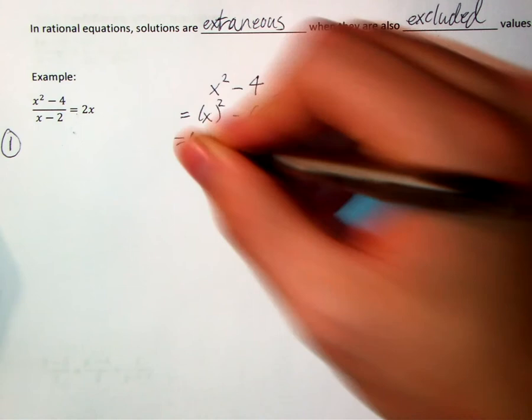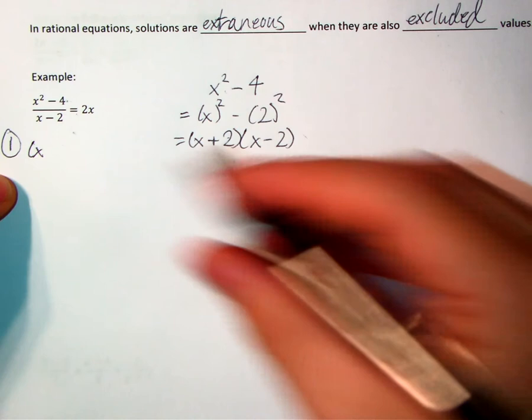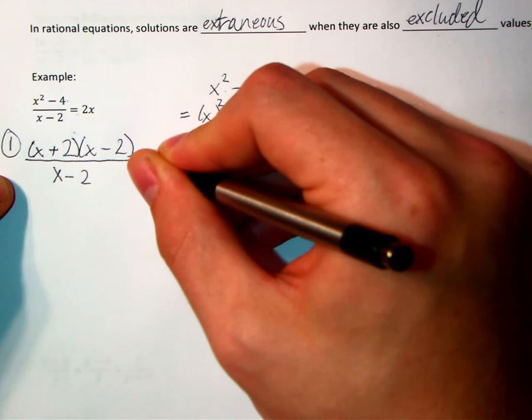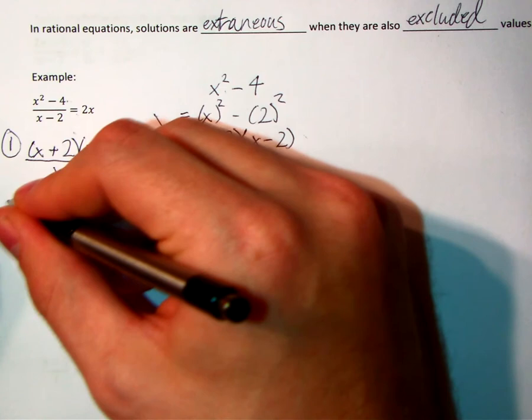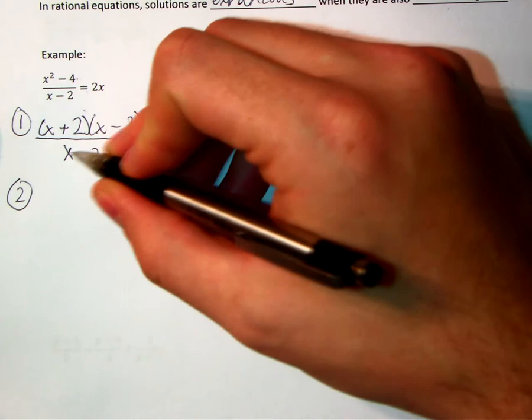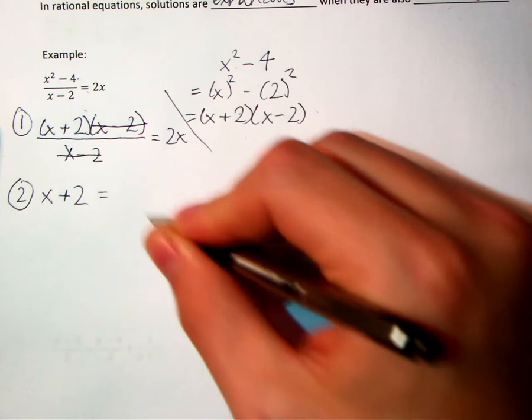I can plug them into the formula for difference of squares: (a + b)(a − b). So this polynomial in the numerator can be written in factored form. I'm just going to replace it with the factored version: x plus 2 times x minus 2, all over x minus 2, equals 2x. Now step two — get rid of all denominators. There's only one denominator here, and we start with canceling matching factors. The denominator is x minus 2, and there's a matching factor on top, so we can cancel those. And all I've got left is x plus 2 equals 2x.